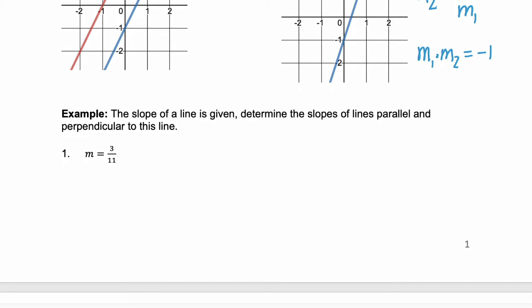Let's find the slope of a line that is parallel and the slope of a line that is perpendicular to a given slope. Here the slope is 3/11. A line that's parallel will have a slope that is exactly the same, 3/11. But a line that's perpendicular will have a slope that's equal to the negative inverse. So it's the reciprocal. It's going to be negative 11/3.